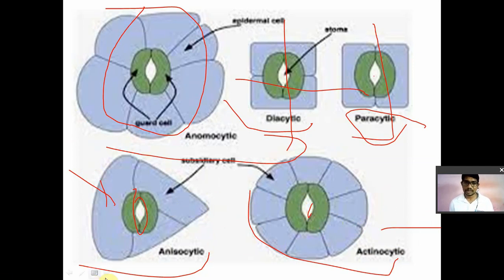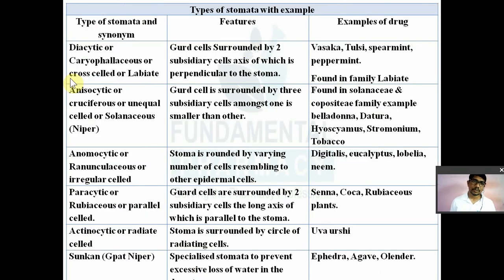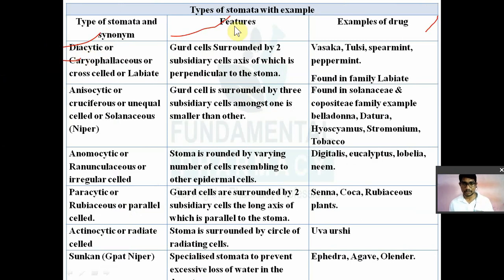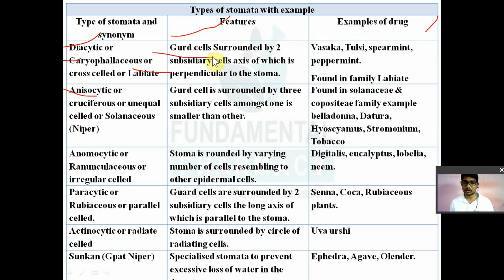Now let's look at the details in the table listing type of stomata, synonyms, features, and examples. The first type is diacytic stomata, also known as caryophyllaceous stomata, cross-celled stomata, or labiate stomata — because they are most abundantly found in the labiate family. In this type, guard cells are surrounded by two subsidiary cells arranged perpendicular to the stoma. This type of stomata is found in tulsi, vasaka, spearmint, and peppermint.